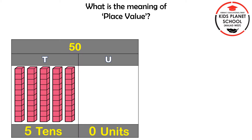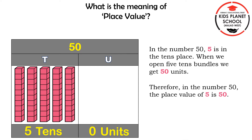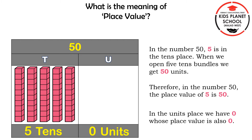Children, now let us see another example. In the number 50, 5 is in the tens place. When we open 5 tens bundles, we get 50 units. Therefore, in the number 50, the place value of 5 is 50. In the units place, we have 0, whose place value is also 0.